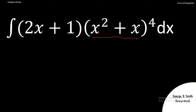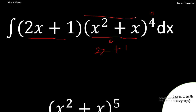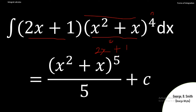If I differentiate x² + x, I get 2x + 1. Since 2x + 1 is exactly what I have outside the bracket, I can apply the formula. I take the power — which is 4 — increase it by one to get 5, then divide by that new power of 5. So the answer is (x² + x)^5 divided by 5, plus c.